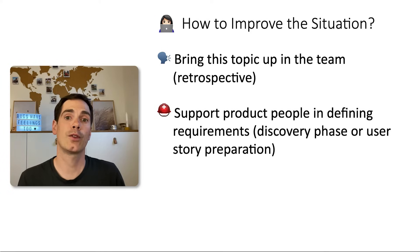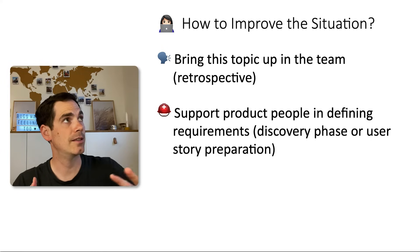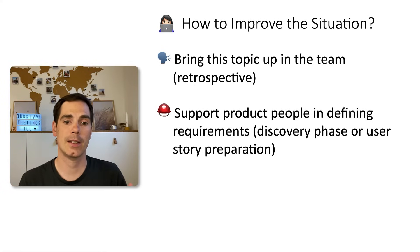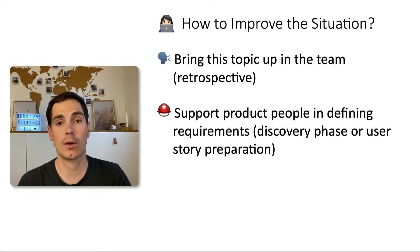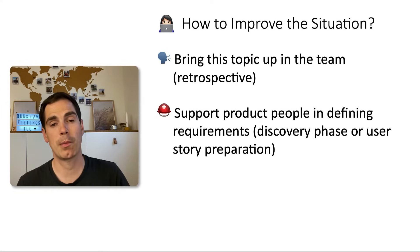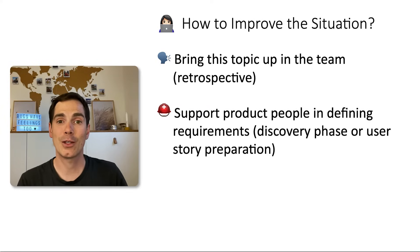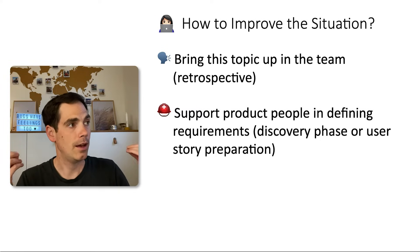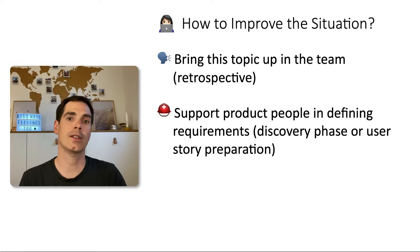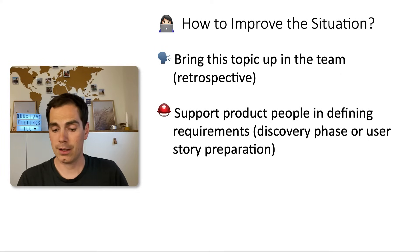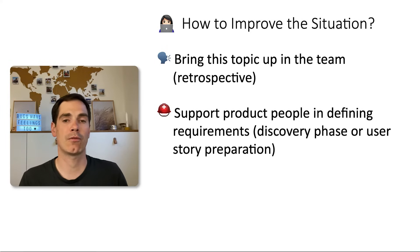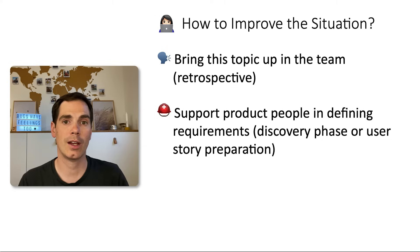How do you improve the situation? Bring this topic up to the team — in a retrospective if you're working with agile methodologies, or in a standup if you don't want to wait. You need to improve the situation as a team, otherwise you will fail. If you've raised the topic and nothing seems to change, step up as a software tester and support product people in defining requirements. Discovery phases or user story preparation phases are a good starting point for you to help product people and UX people add requirements, ask questions, and bring everything together.